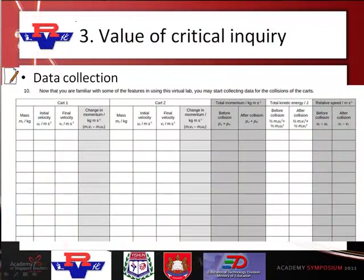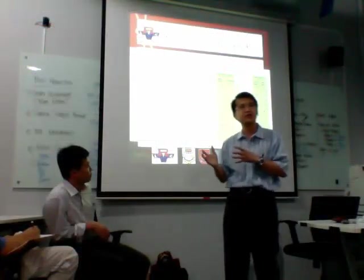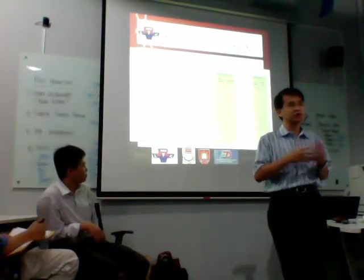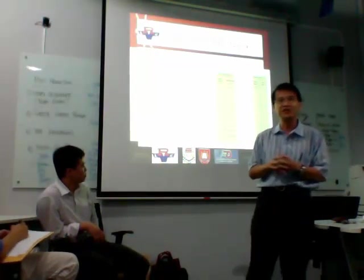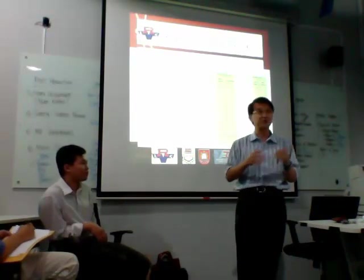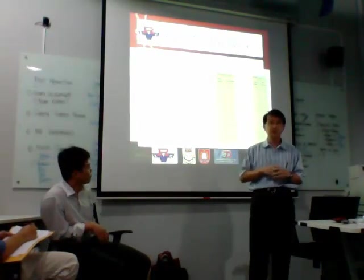Using the simulations, they collected very consistent data, which is actually the key. The affordance of ICT in this case is that I can actually run the activity in a very short amount of time. Data gathering would take about 10 to 15 minutes. To save time, we actually assigned them different kinds of data to collect. There was feedback later that they would rather collect all the data themselves, rather than collect one set and then come together at the end to compare results.